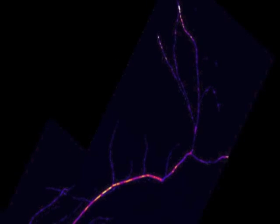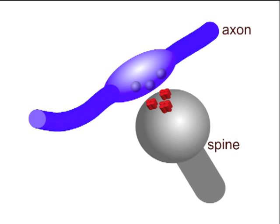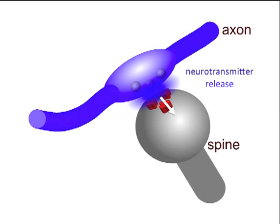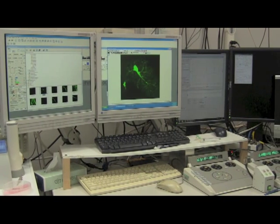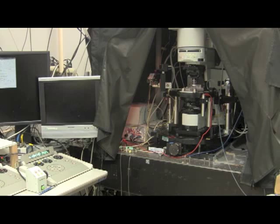Our brain operates as a large neuronal network. Neurons are connected to each other by specialized contacts called synapses. Information arrives through synapses in the form of action potentials. Action potentials trigger release of neurotransmitter, which activates postsynaptic receptors of different kinds. We are particularly interested in glutamatergic synaptic transmission, mediated by the neurotransmitter glutamate. Synaptic transmission is considered a key part of signal propagation, and plasticity of synaptic signaling — long-term changes in synaptic strength — is considered a mechanism for learning and memory.